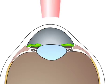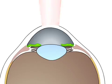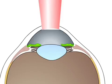In transepi LASIK, the surface epithelium layer is vaporized accurately using excimer laser. Once the Bowman membrane is exposed, the same excimer laser is then applied to shape your cornea, correcting your vision.